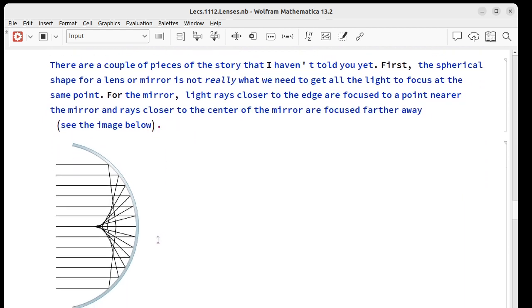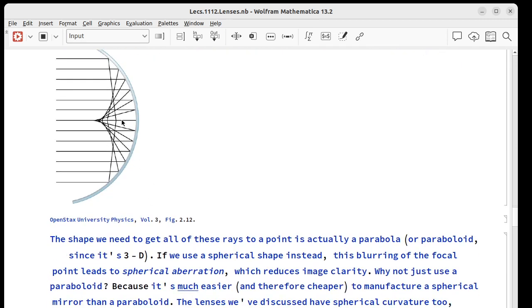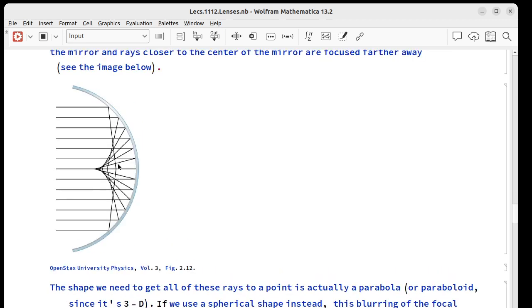Now, there are a couple of pieces of the story that I left out. First, when we say we want the spherical cross-section for a lens or mirror, that's not really what we want. It's commonly what we get. The light rays actually don't all focus at exactly the same point. You can see there's a spread here. There's more of a focal region. For the light rays closer to the edge, they get focused closer to the mirror. The other ones further out. This blurs the image, and what this gives us is what's called spherical aberration, where aberration means our image clarity is going to be reduced.